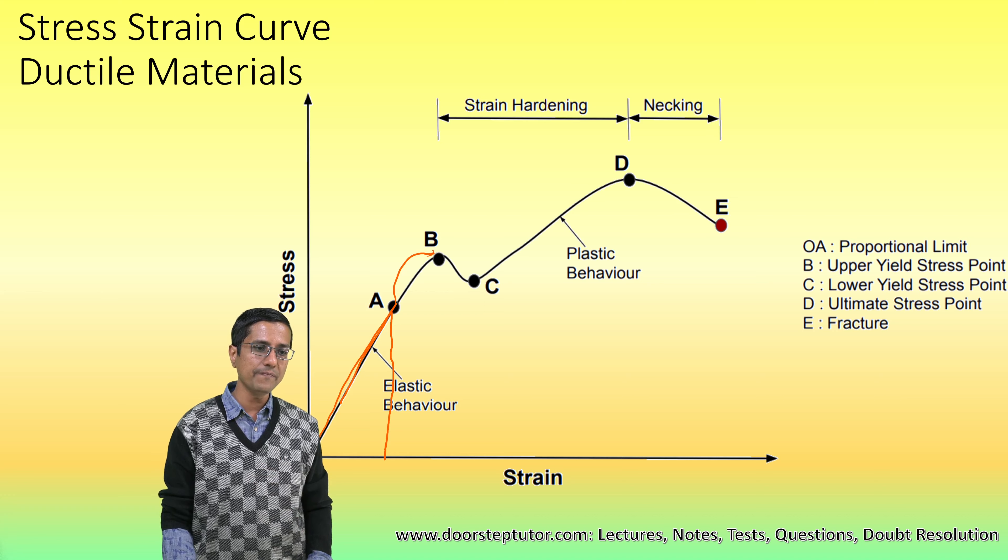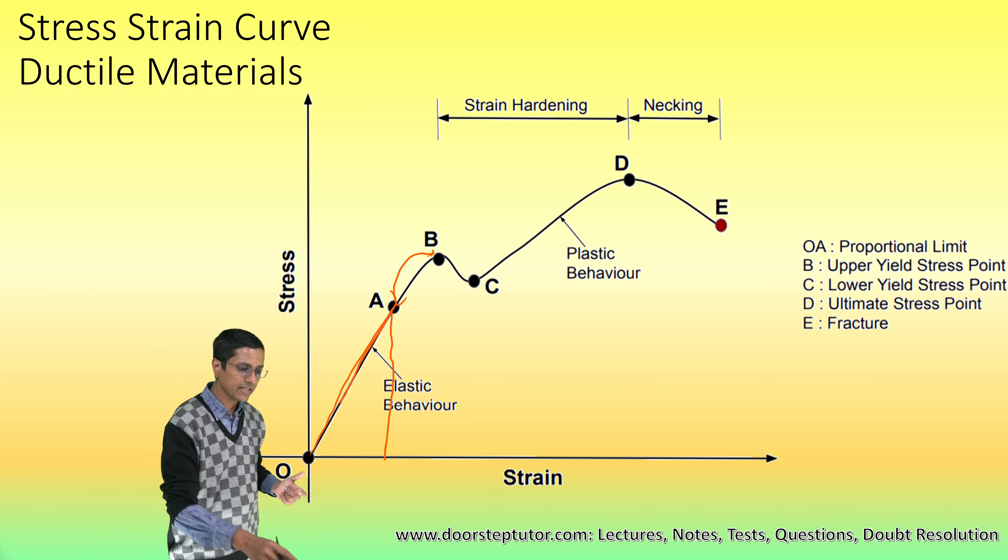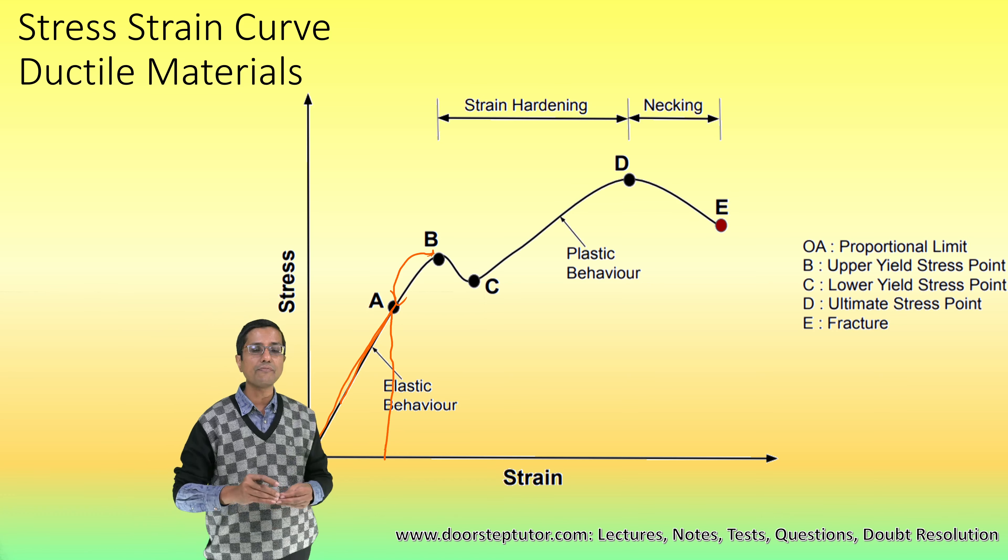Then the region AB where the material is elastic. What does that mean? It means that if I remove the force from the material, it would revert back to its original position. Till the region OB, the material is elastic, which means that if I remove the stress, it will come back to the original position.